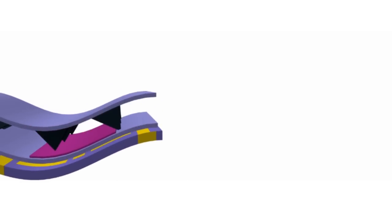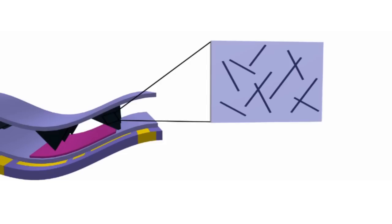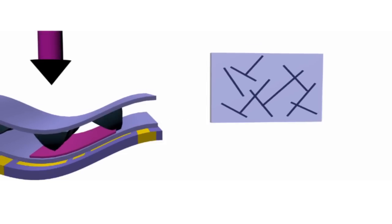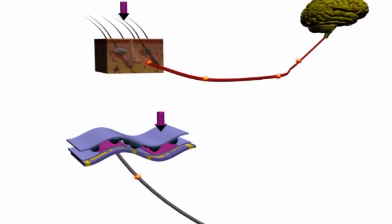The top layer is infused with carbon nanotubes, tiny structures that get pushed together when pressure is applied. As with real skin, the more pressure that is applied to the artificial skin, the more electronic signals it will send to the brain.